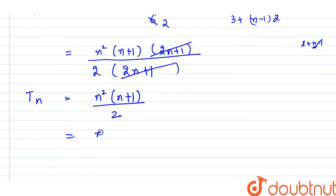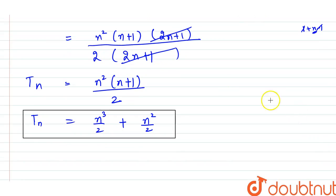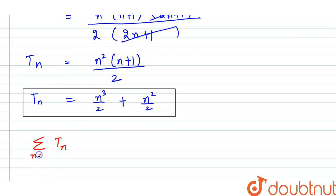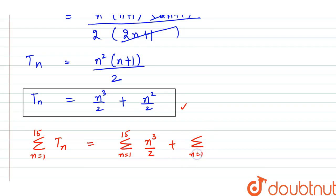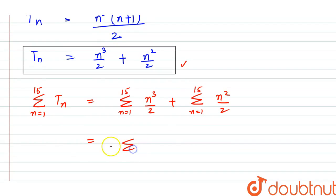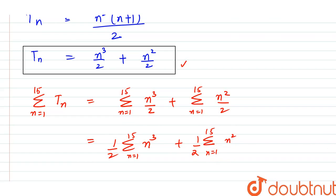Now we have to find the sum of Tₙ for the first 15 terms. So S = Σ(n=1 to 15) Tₙ = Σ(n=1 to 15) [n³/2 + n²/2]. We can break this into (1/2)·Σn³ + (1/2)·Σn², where both summations run from n = 1 to 15.